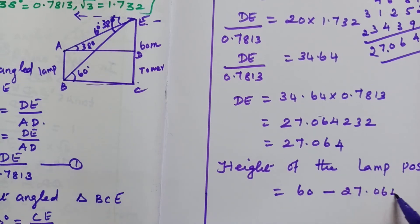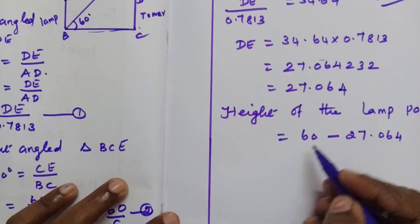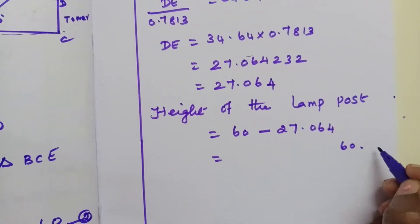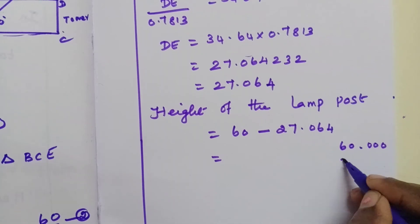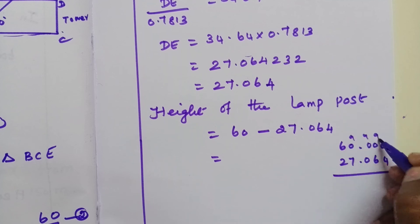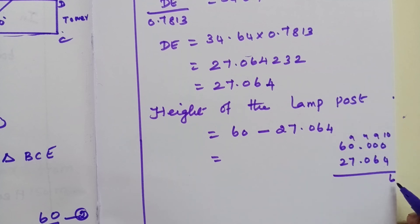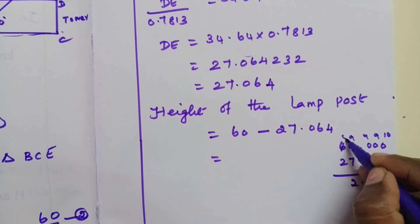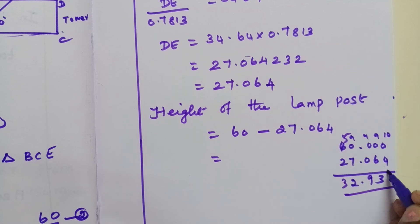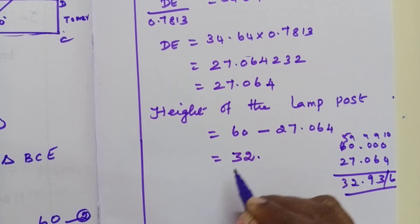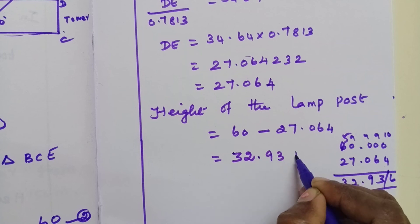Now we subtract the CD length, that is the height of the lamp post. So 60 minus 27.06. Going through the subtraction: 60.00 minus 27.06 equals 32.93 meters. So the height of the lamp post is approximately 32.93 meters.